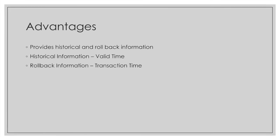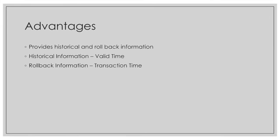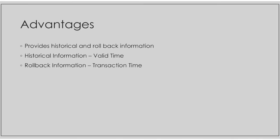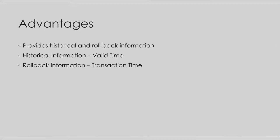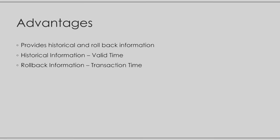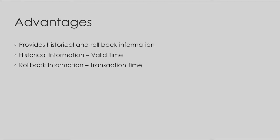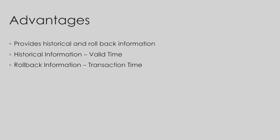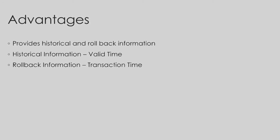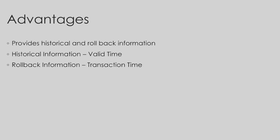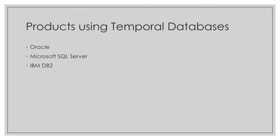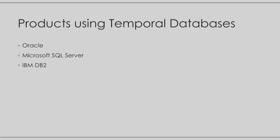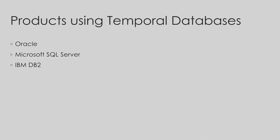The main advantage of bitemporal relations is that it provides both historical and rollback information. You can get the result for a query on John's history — like where did John live in the year 2001 — with the valid time entry. The transaction time entry is important to get the rollback information. The popular products that use temporal databases include Oracle, Microsoft SQL Server, and IBM DB2.